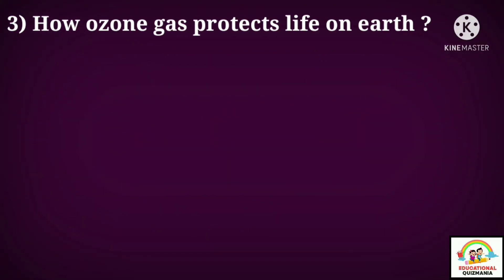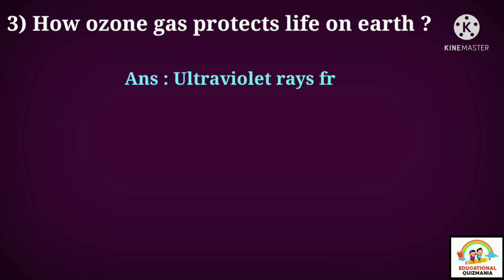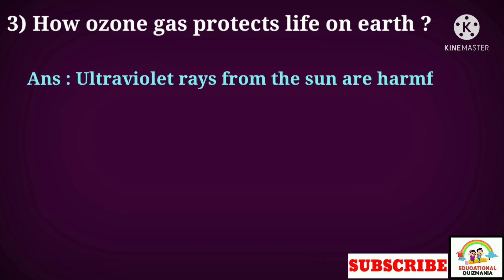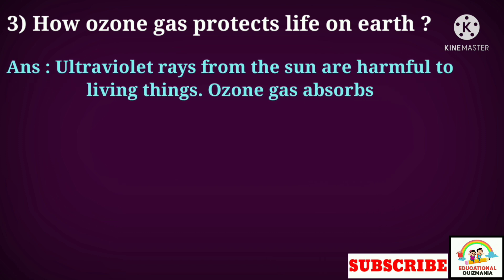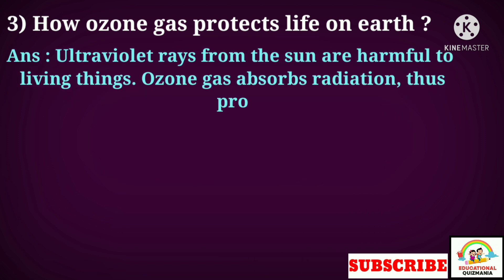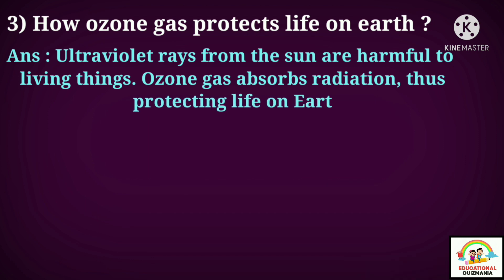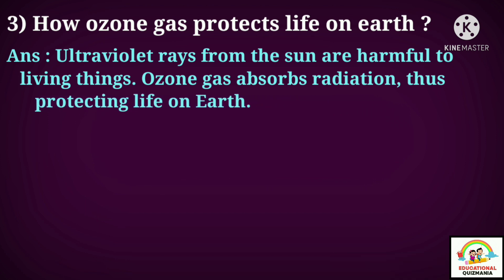Question three: How does ozone gas protect life on earth? Answer: Ultraviolet rays from the sun are harmful to living things. Ozone gas absorbs this radiation, thus protecting life on earth.